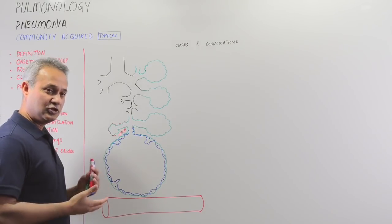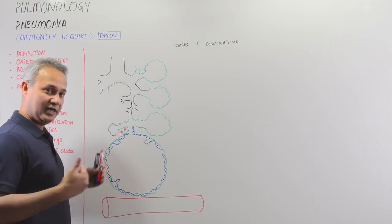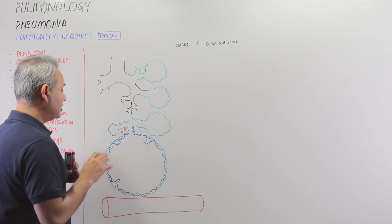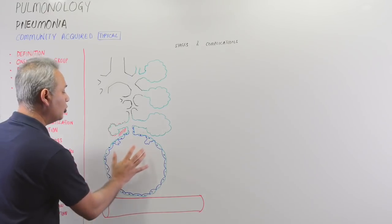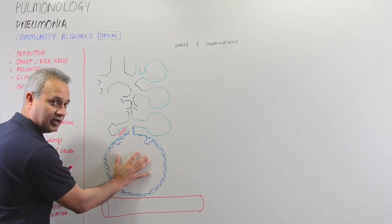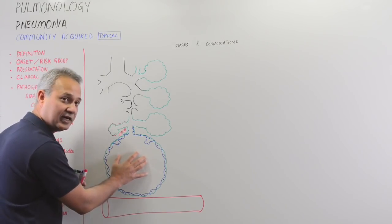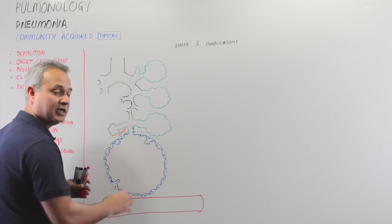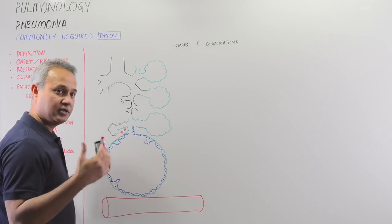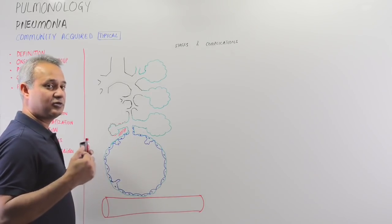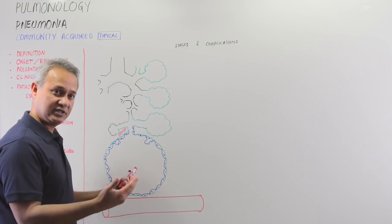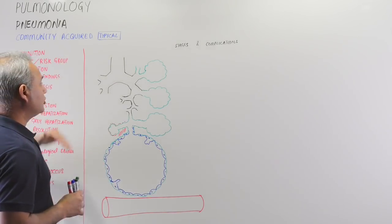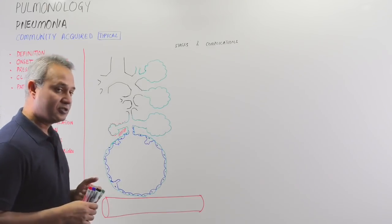In atypical pneumonia, the alveoli are mostly empty and not involved, so the patient's X-ray and symptoms do not actually reflect the kind of problem occurring in the chest. In typical pneumonia, the alveoli are involved — there is exudate and bleeding in the alveoli, they become filled up, and this shows up on X-rays and in the clinical presentation. Let's start with typical pneumonia, which is normally bacterial in origin.